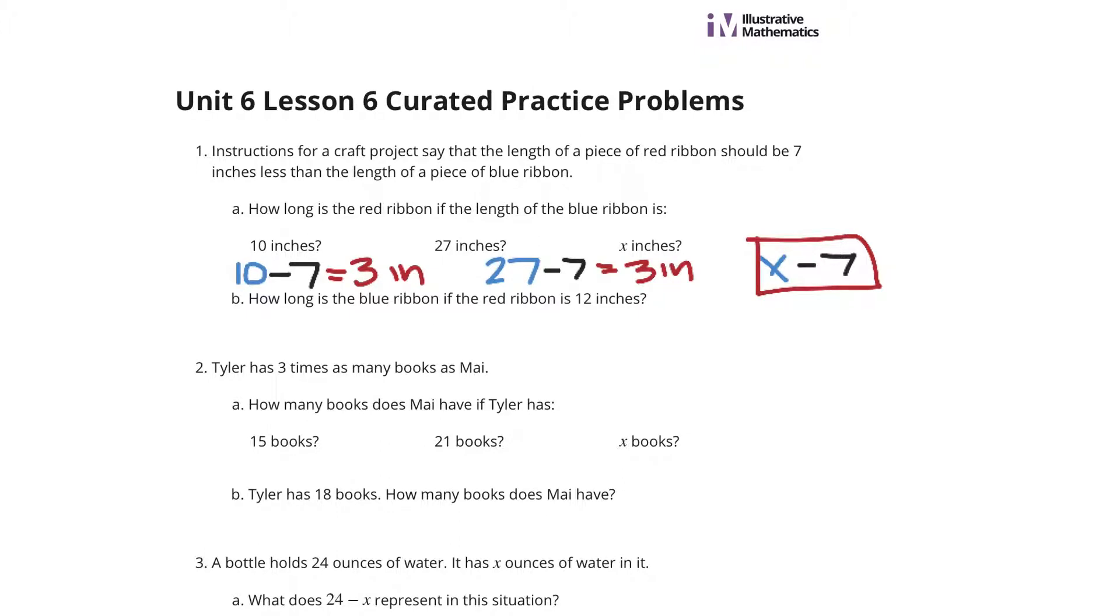Now in part b, how long is the blue ribbon if the red ribbon is 12 inches? Well, the blue ribbon has always been whatever the red ribbon plus 7 seems to be. So if we take 12 and add 7 to that, we get our blue ribbon at 19 inches.